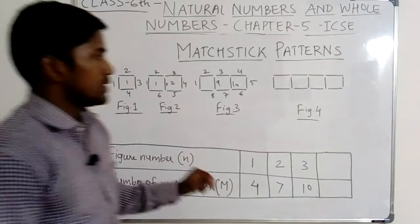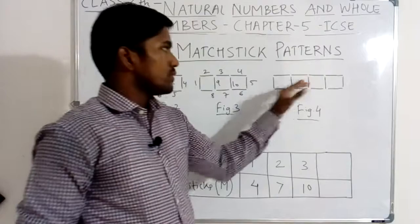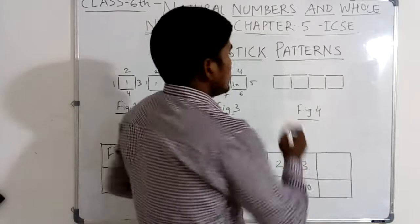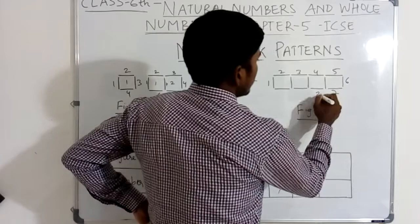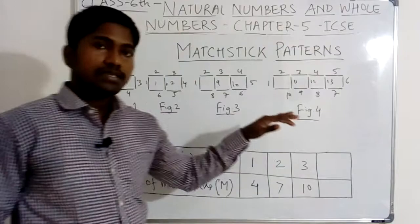In figure number 4, how many squares are made? One, two, three, four — four squares made by mastic. We will count the number of mastic used: one, two, three, four, five, six, seven, eight, nine, ten, eleven, twelve, thirteen. Thirteen numbers of mastic are used in figure number 4.